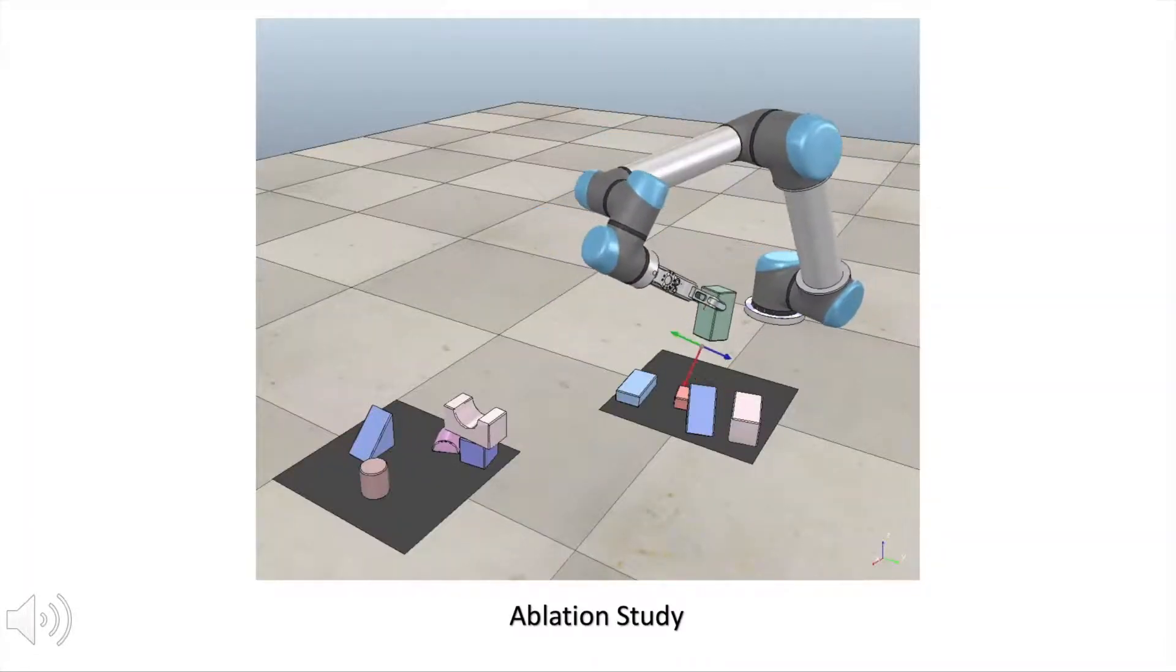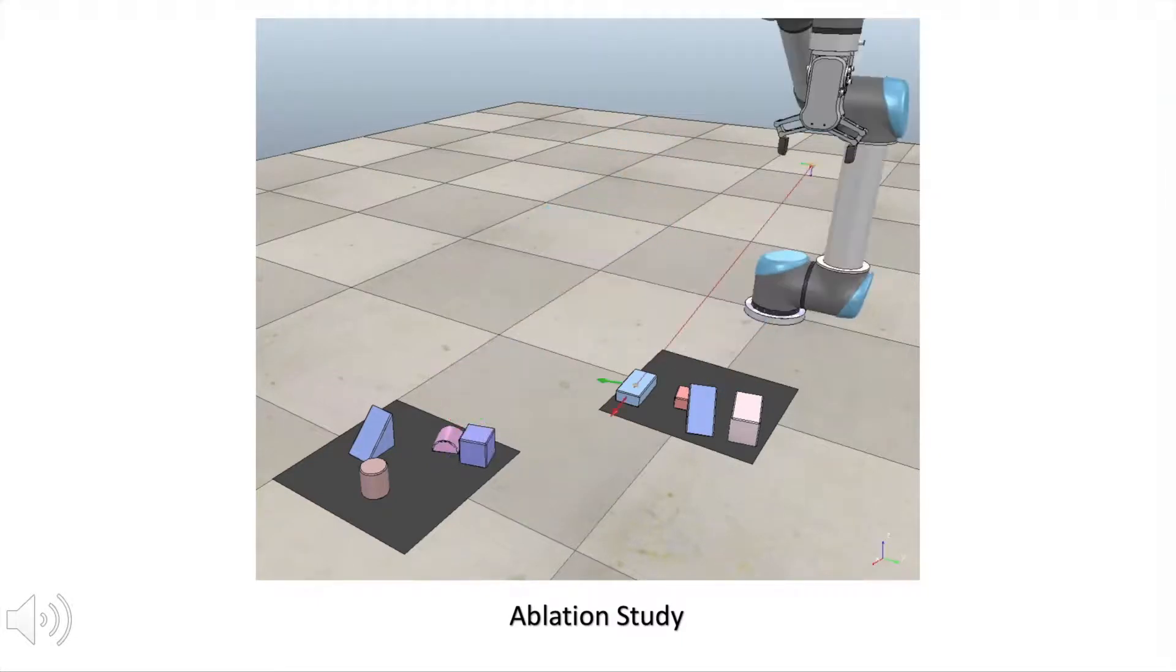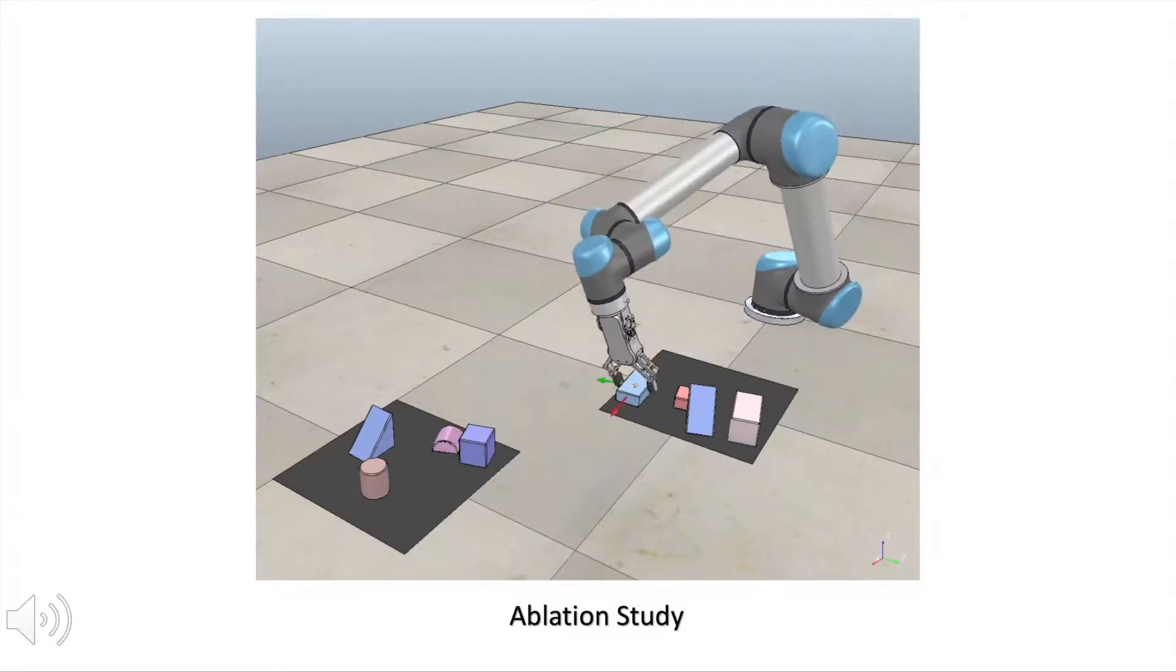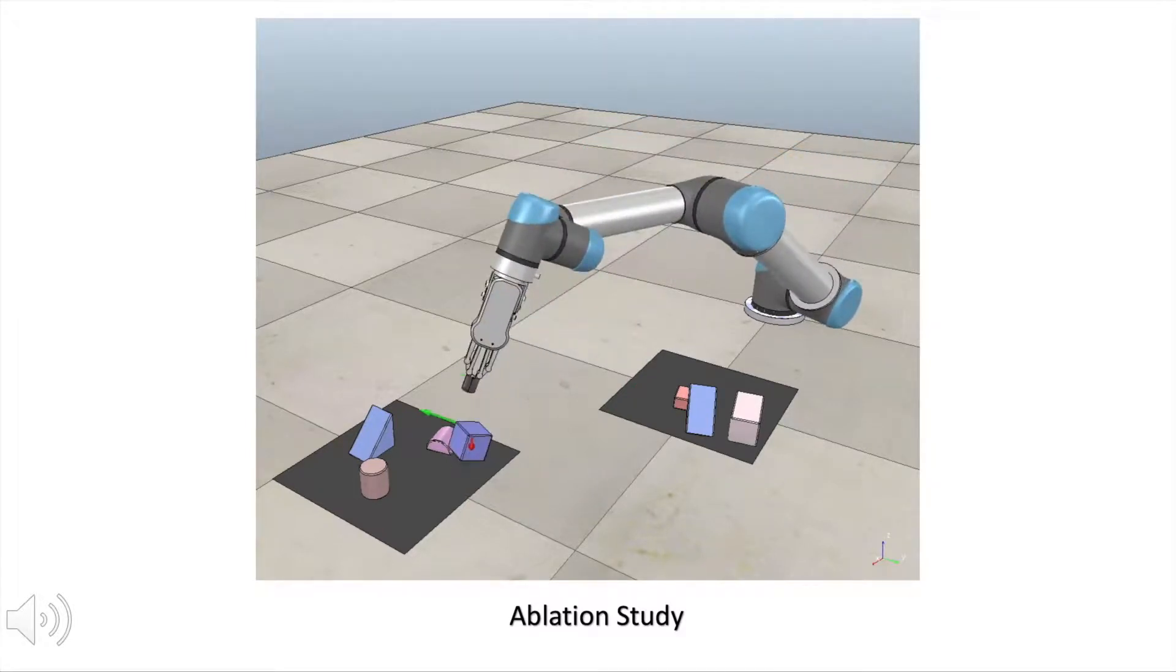The ablation study demonstrates the effectiveness of our reachability predictor. The robot is able to intelligently choose reachable grasp poses without any workspace and approaching direction constraints.